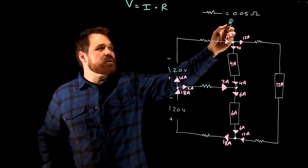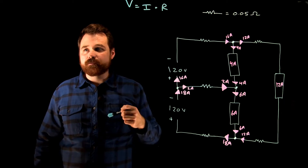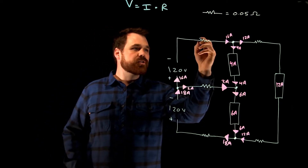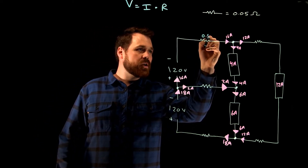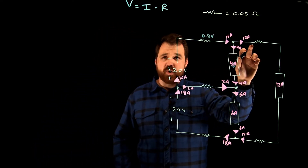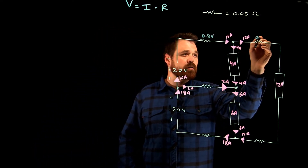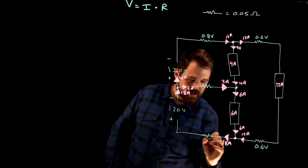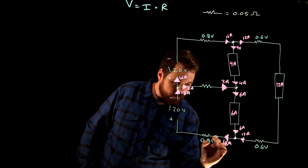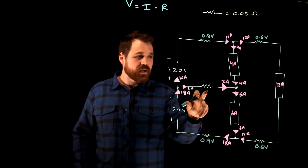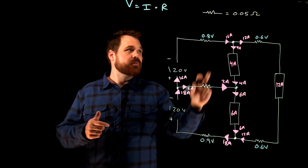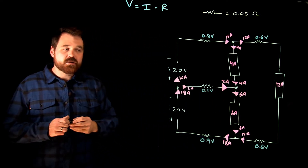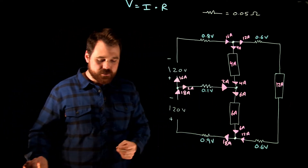We're going to say that each conductor is 0.05 ohms, and I'm going to go around and put all the voltage drops. Here I have 16 amps, which gives me a voltage drop of 0.8 volts. Here I have 12 amps, which gives me 0.6 volts. Again, 12 amps gives 0.6 volts. 18 amps gives me 0.9 volts. And here I had 2 amps — 0.05 ohms gives me 0.1 volts. That gives me all of my conductor voltage drops.